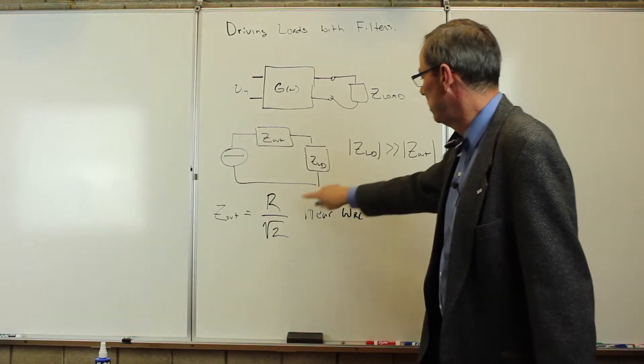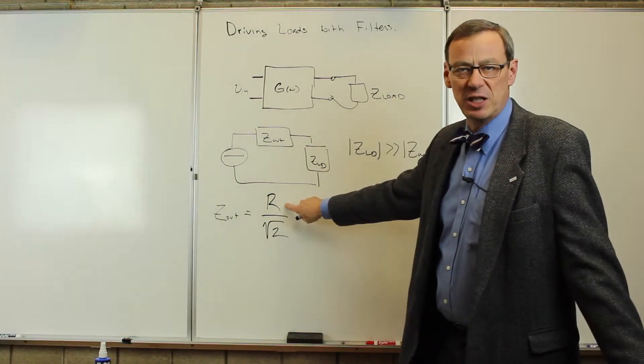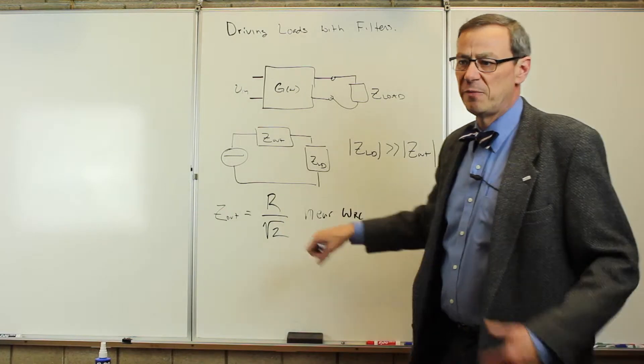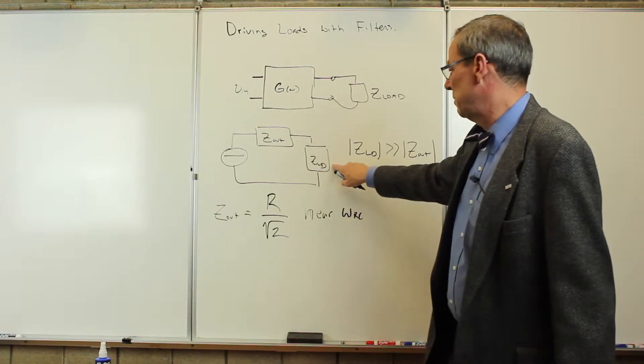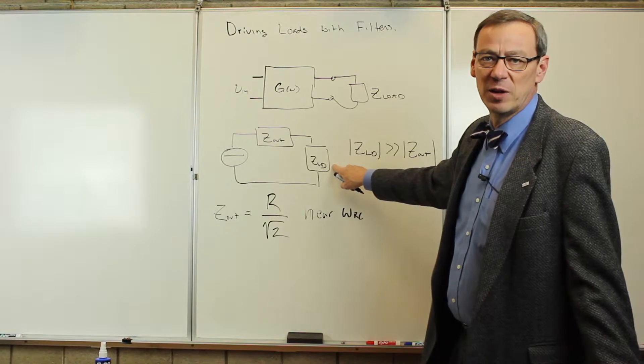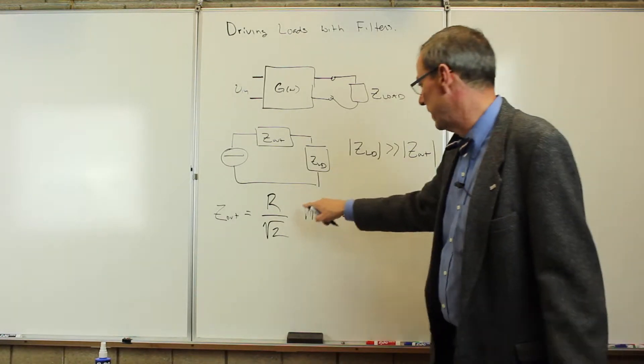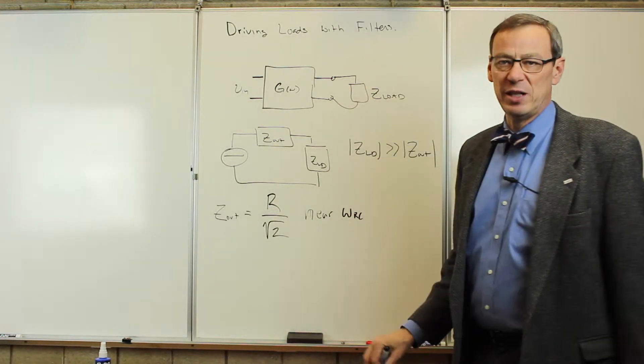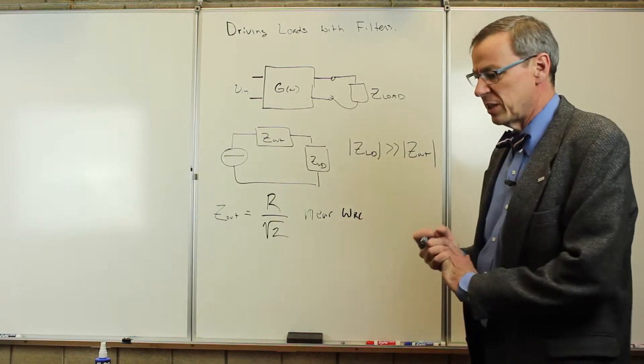So, that means that this load, we need to choose it to be much bigger than the resistance in the filter. So, if we have a kilo-ohm resistor in there, maybe we need this to be 20 kilo-ohm, 50 kilo-ohm, or 100 kilo-ohm. It has to be fairly big so we don't load down this filter here. So, that's the output side.